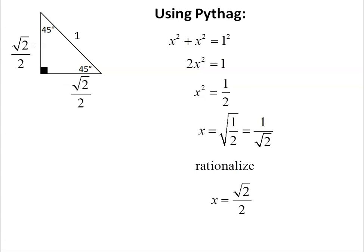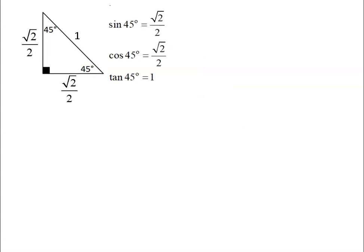So both of these are root two over two. And now that I know that, I can come up with all of the trig ratios because sine of 45 is the opposite divided by the hypotenuse. Cosine of 45 is the adjacent divided by the hypotenuse.